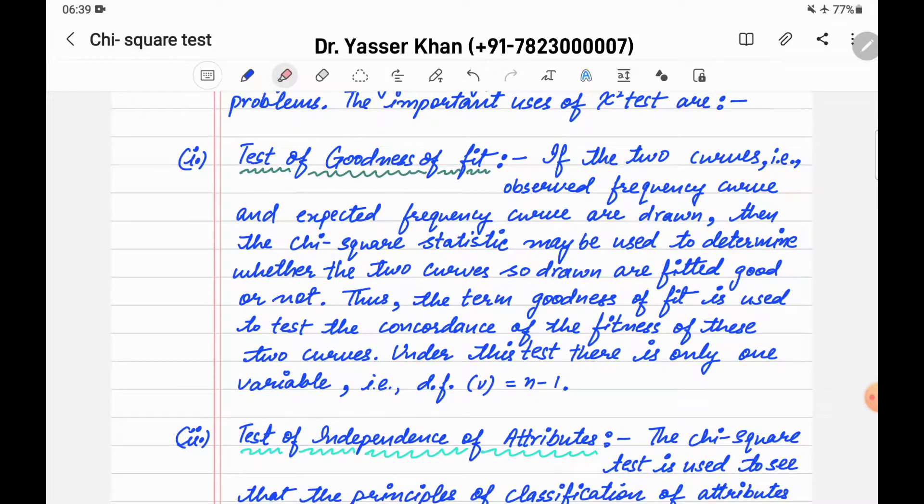If the two curves, that is observed frequency curve and expected frequency curve are drawn - I have observed frequency O and expected frequency E drawn - then the Chi-square statistic may be used to determine whether the two curves so drawn are fitted good or not.